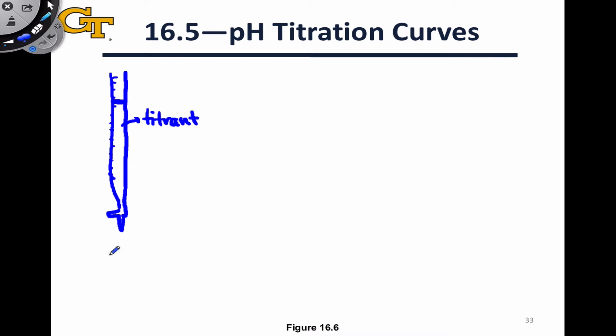Below the burette, we have a flask, often it's an Erlenmeyer flask, and inside that flask, we start with pure analyte. But, of course, as we drip the titrant into the analyte over time, we end up with a combined solution of analyte and titrant. And in an acid-base titration, a proton transfer process, an acid-base process, is occurring inside this Erlenmeyer flask.